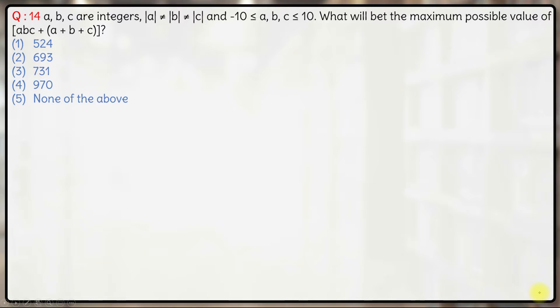Hello everyone, so here we have a very interesting question based on inequalities. We are given that ABC are integers where mod of A is not equal to mod of B is not equal to mod of C. That means the absolute value of none of the three is equal where ABC are between minus 10 and plus 10.